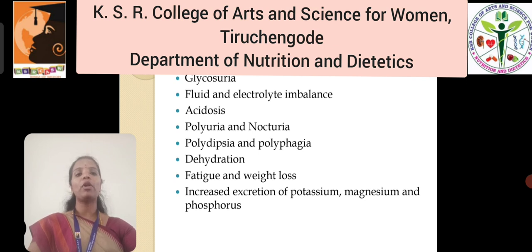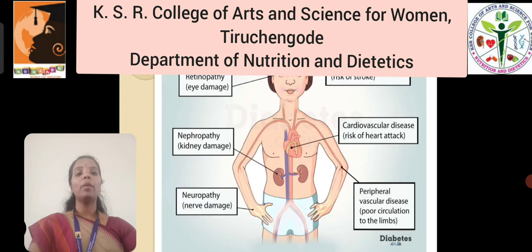Additional symptoms include polydipsia, polyphagia, dehydration, fatigue and weight loss, and increased excretion of potassium, magnesium and phosphorus found in the blood.